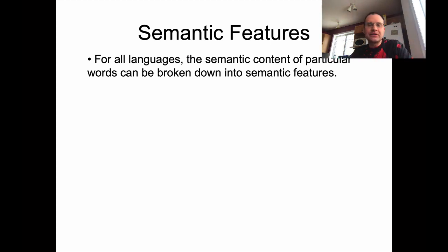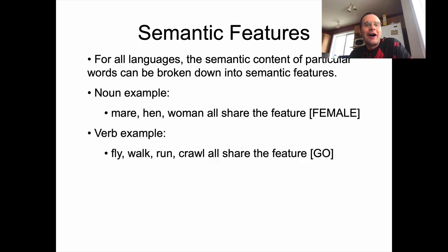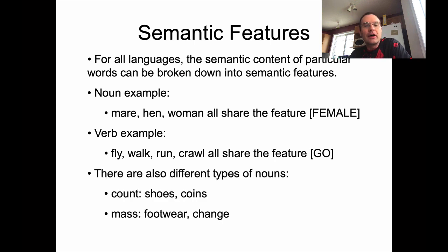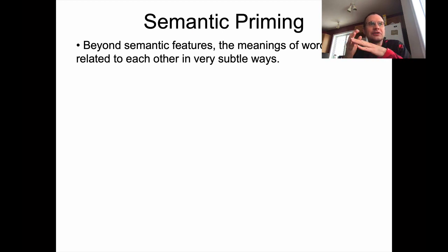So I mentioned this in the last lecture — just putting this slide up as a bit of review. For all languages, the semantic content of particular words can be broken down into semantic features. We saw this with the feature 'female,' covering words like mare, hen, woman. We had the feature 'go' for verbs like fly, walk, run, and crawl. We also talked about different types of nouns — count nouns and mass nouns like coins versus change. Beyond semantic features, the meaning relationships between words can be studied at a more subtle level, looking at how words are connected with one another.